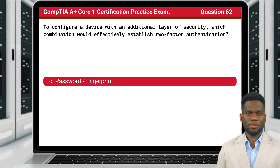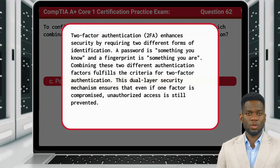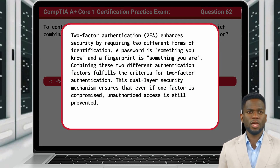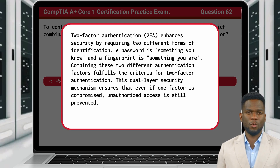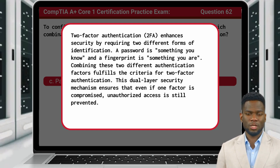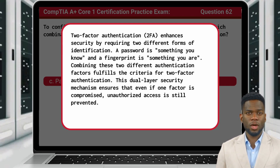The answer is C, password and fingerprint. Two-factor authentication enhances security by requiring two different forms of identification. A password is something you know and a fingerprint is something you are. Combining these two different authentication factors fulfills the criteria for two-factor authentication. This dual-layer security mechanism ensures that even if one factor is compromised, unauthorized access is still prevented.